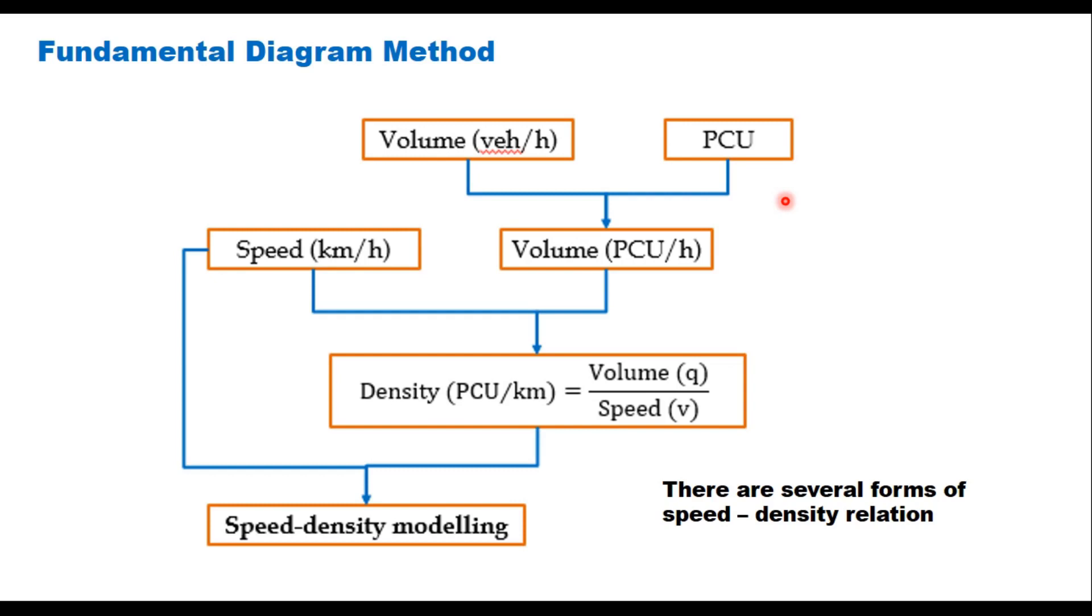Now fundamental diagram method is used to draw speed flow relationship and it has 3-4 steps. First you have the traffic volume data at 5 minute intervals in terms of vehicles per hour.